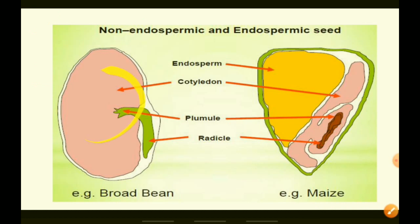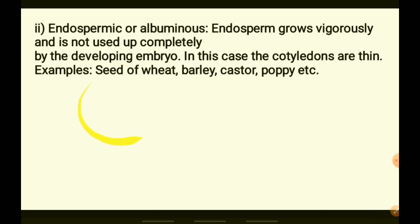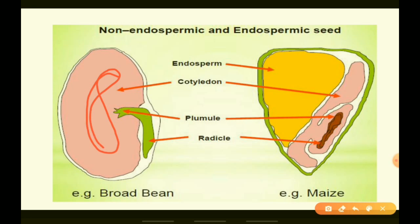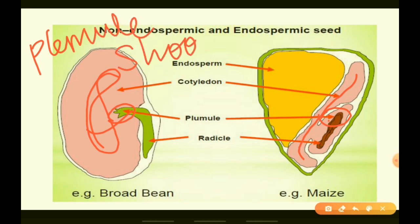This is the seed of a dicot plant — broad bean — and this is a monocot seed — maize. In the broad bean, the full portion is the cotyledon; here is the plumule, which will become the shoot, and this is the radicle in the dicot seed. The radicle is also visible in the monocot seed and it will become the root.